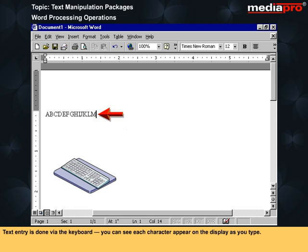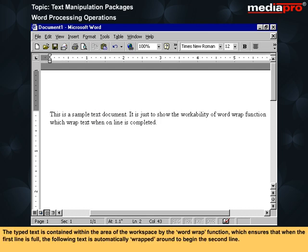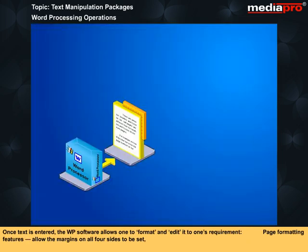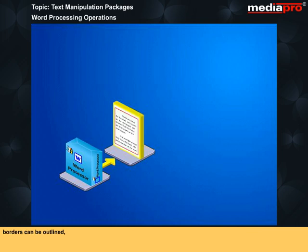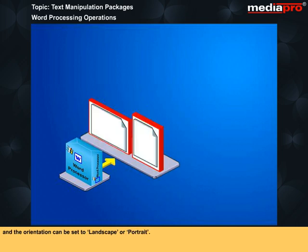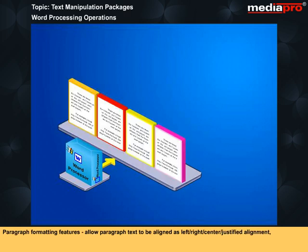You can see each character appear on the display as you type. The typed text is contained within the area of the workspace by the word wrap function, which ensures that when the first line is full, the following text is automatically wrapped around to begin the second line. Once text is entered, the word processing software allows one to format and edit it to one's requirement. Page formatting features allow the margins on all four sides to be set.